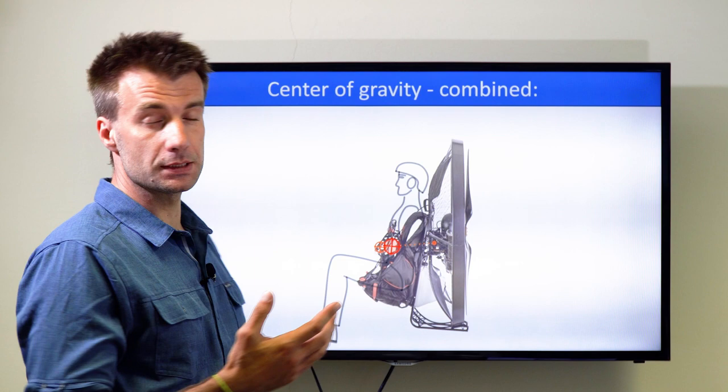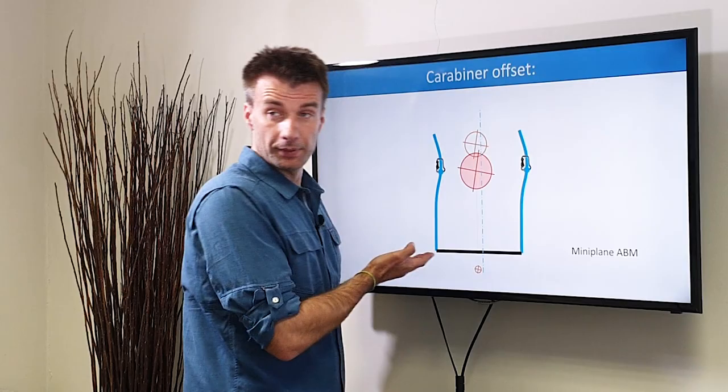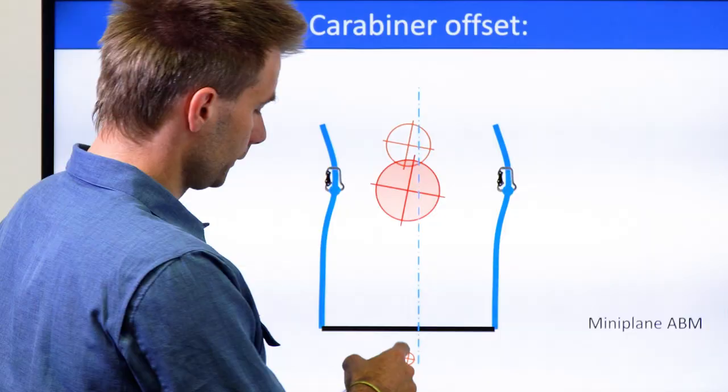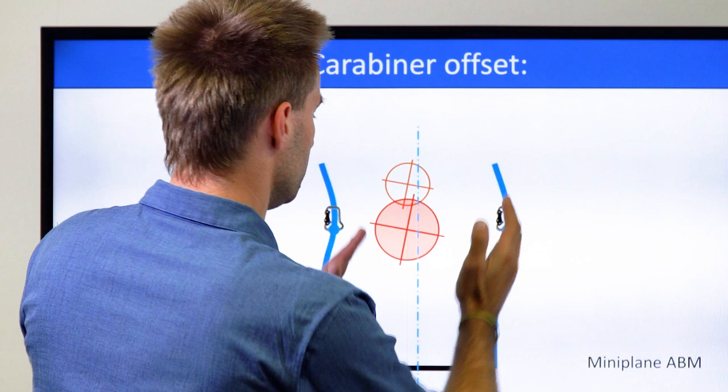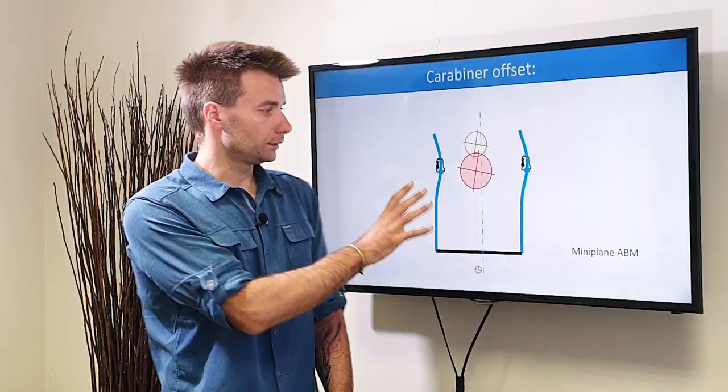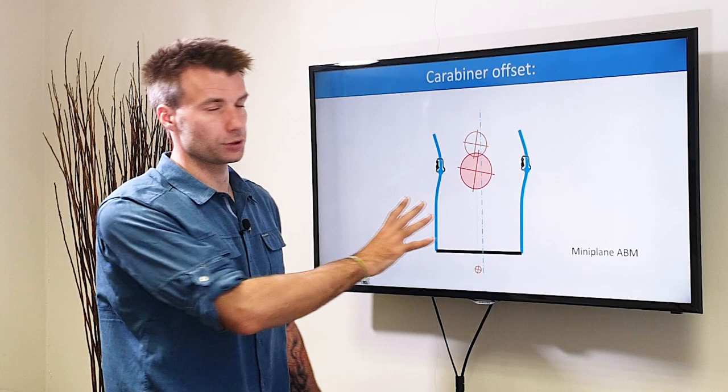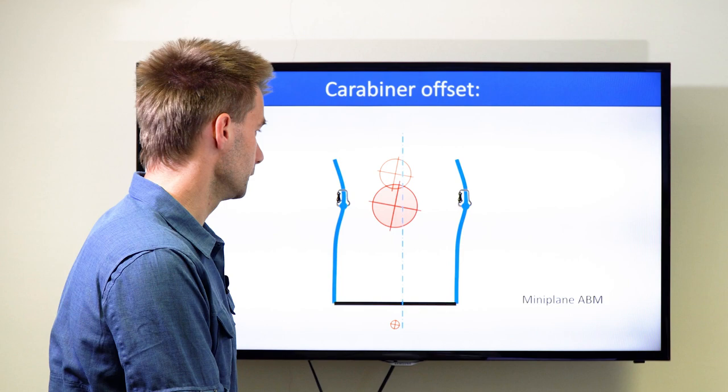Now let's have a look how the Mini Plane geometry looks from above. This is the paramotor frame, the center of gravity of the paramotor with the engine, center of gravity of the pilot, and center of gravity combined. Now we have these gooseneck bars a little bit skewed to the side so you get the carabiners a little bit off center. This chart is made for a paramotor that is torquing to the right, so you need to compensate to the left.